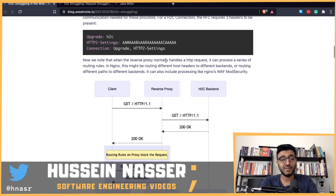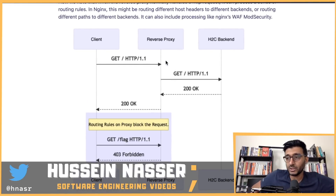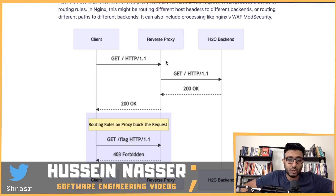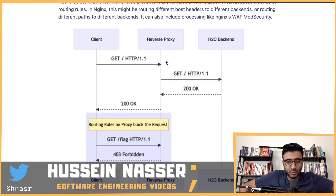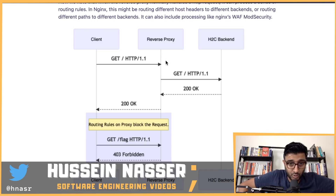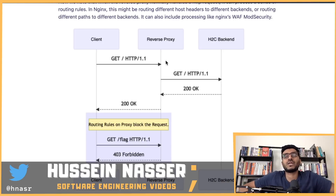Sean did a very nice graphic explaining HTTP/2 over cleartext. HTTP/2 by default is secured, and the reason is protocol ossification. The boxes in the middle - NAT boxes and routers - know that if you're communicating over port 80, you must be using HTTP, and they expect HTTP 1.1. They didn't anticipate a breaking change like HTTP/2, which introduced a completely new protocol with streams and other features.